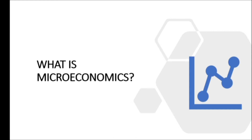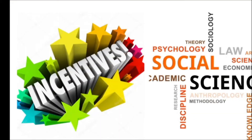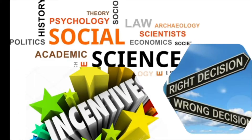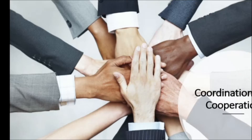What is microeconomics? Microeconomics is the social science that studies the implications of incentives and decisions, specifically about how those affect the utilization and distribution of resources. Microeconomics shows how and why different goods have different values, how individuals and businesses conduct and benefit from efficient production and exchange, and how individuals best coordinate and cooperate with one another.